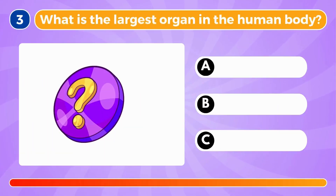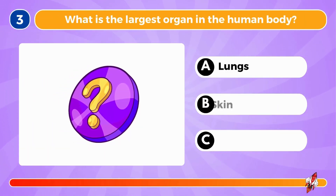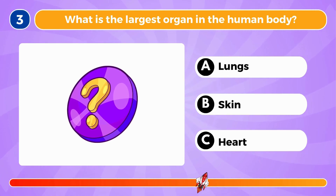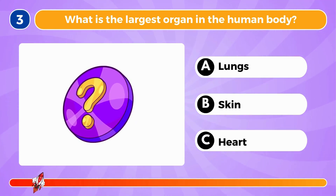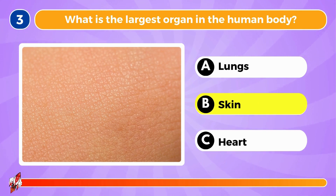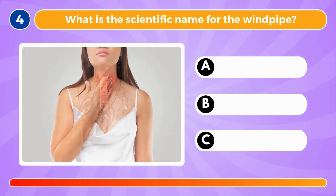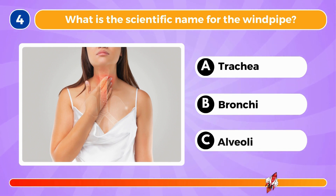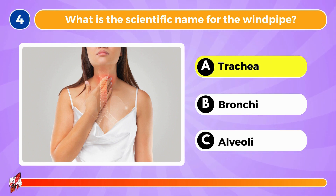What is the largest organ in the human body? It's the skin. What is the scientific name for the windpipe? It's called the trachea.